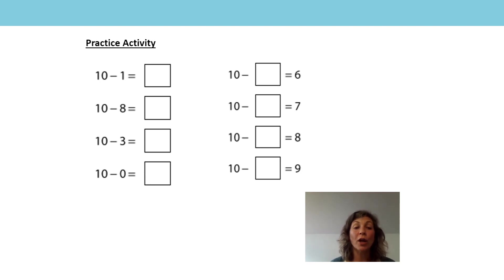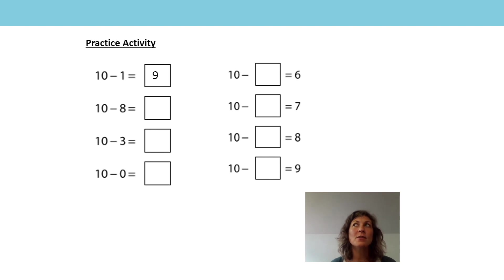10 is made of 1 and 9, 9 and 1 make 10, so 10 minus 1 is equal to 9. 10 is made of 2 and 8, 8 and 2 make 10, so 10 minus 8 is equal to 2.